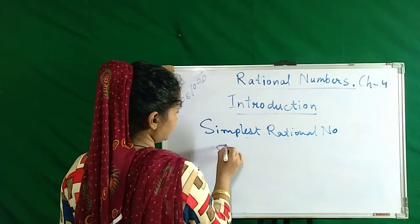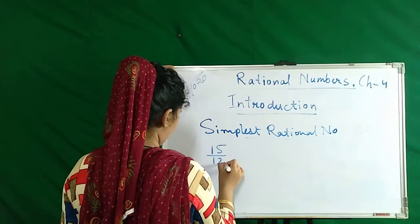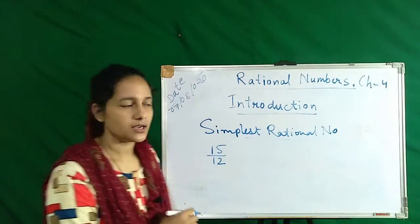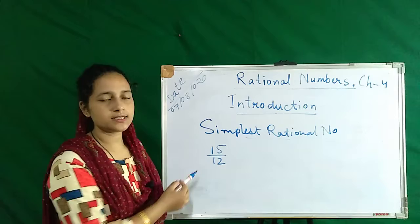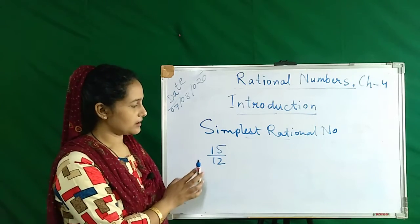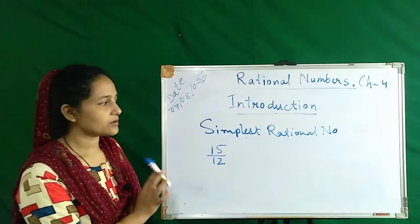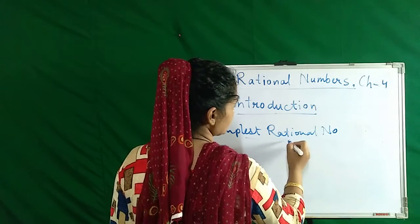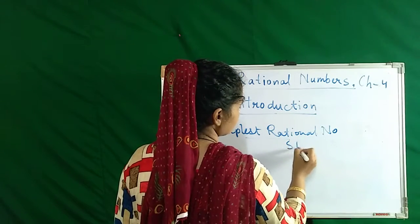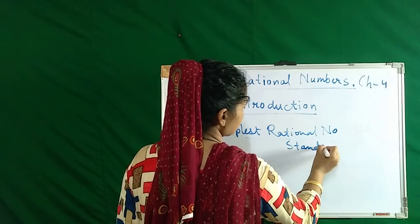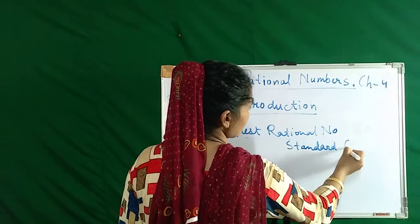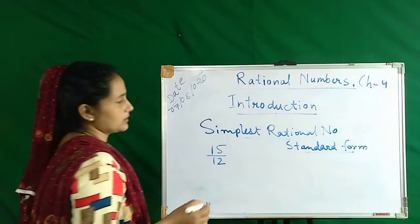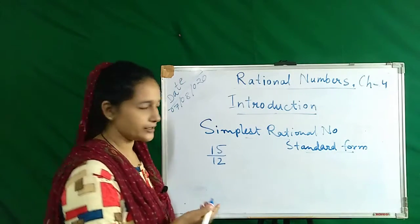Like 15 by 12 — this is a rational number. 15 by 12 is also called the standard form. Let's start solving.